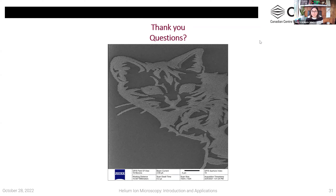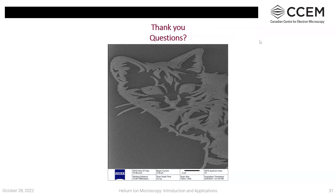Q: In the kirigami application, why does the gallium beam cause the structures to curl — is it related to electrostatic repulsion from implanted gallium ions? I'm not entirely sure why that behavior occurs; I think it's related to stresses in the membrane, but I'm not certain. This was a very interesting paper published this year and I can follow up offline.